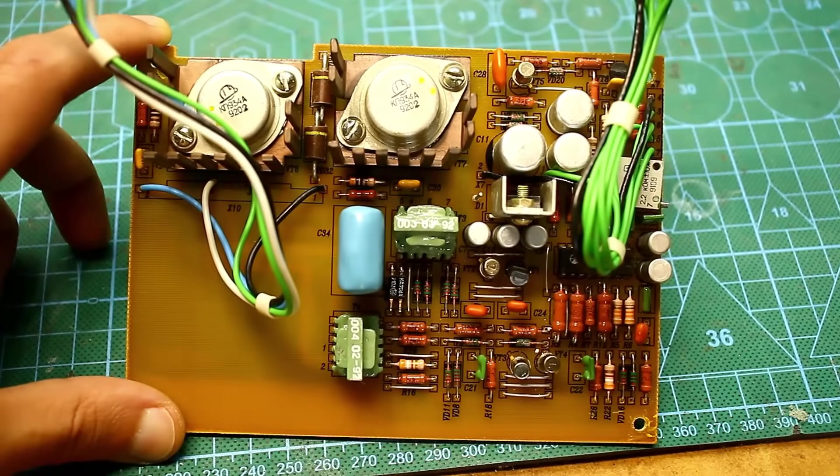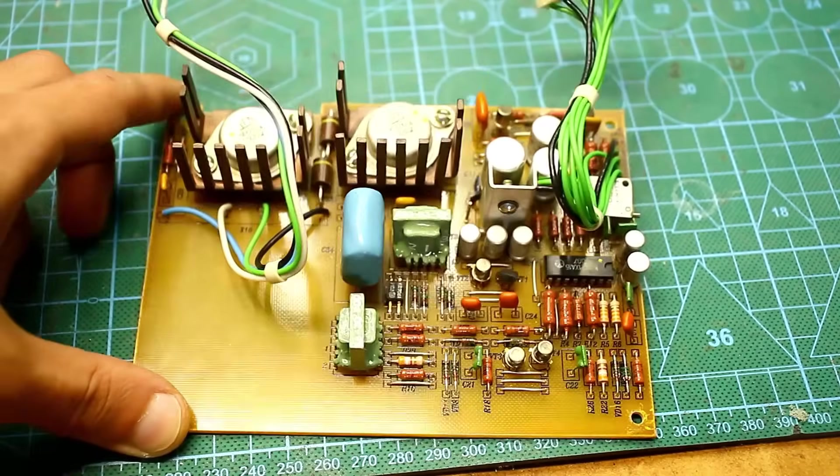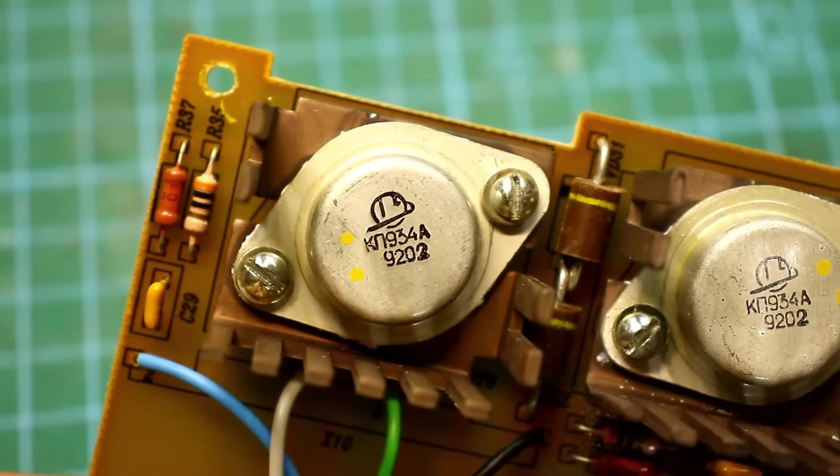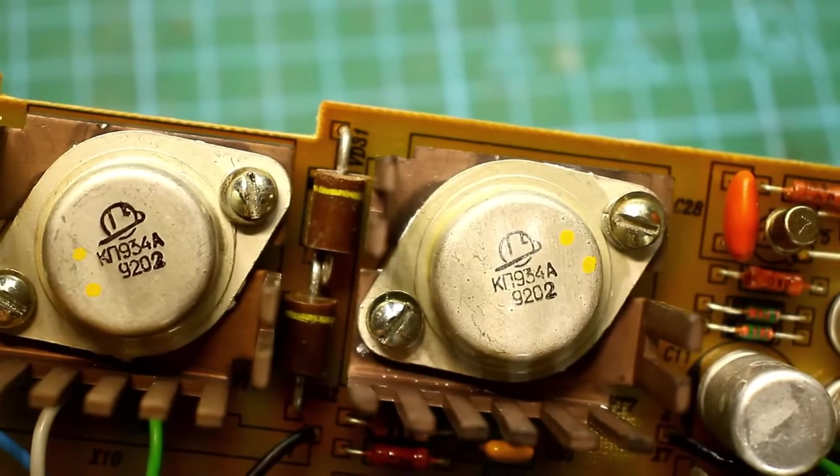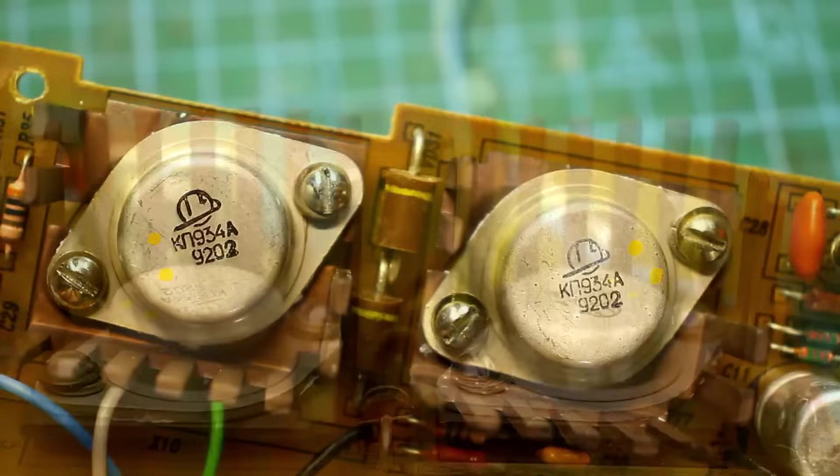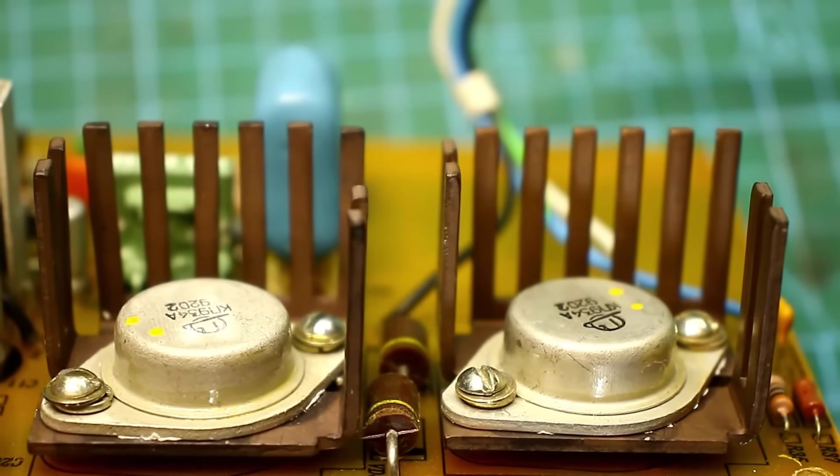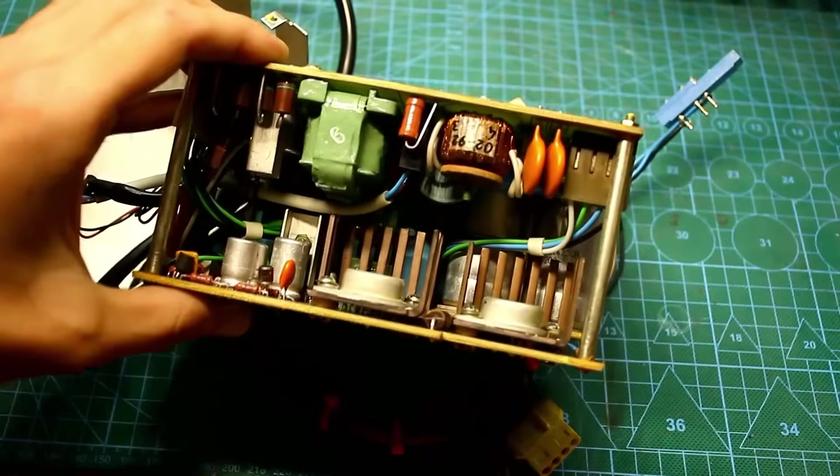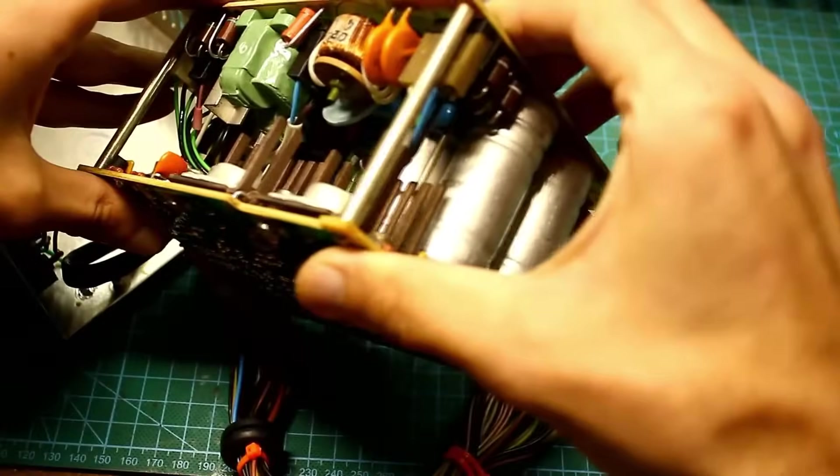The power transistors are in A23 package, Soviet KP934A. These are N-channel field effect transistors with a drain source voltage of 450 volts and a current of 10 amperes. Just so you know, transistors with similar characteristics are used in high-end modern power supplies with a power output of up to 700 watts.